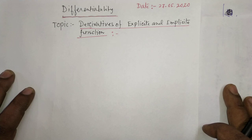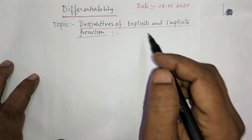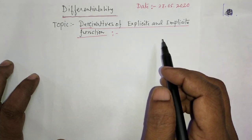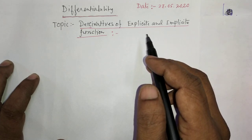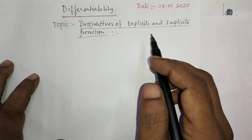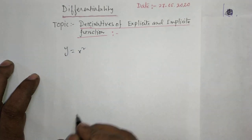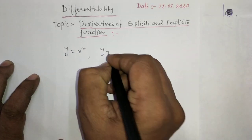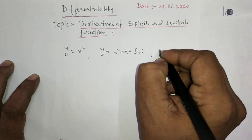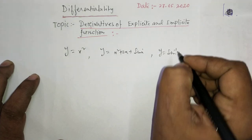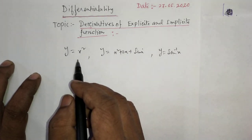Derivative of explicit and implicit functions. Before going to derivatives of explicit and implicit functions, first we have to understand what is an explicit function and what is an implicit function. For example, suppose y equals x squared, suppose y equals x squared plus 2x plus sin x, or suppose y equals sin inverse x.